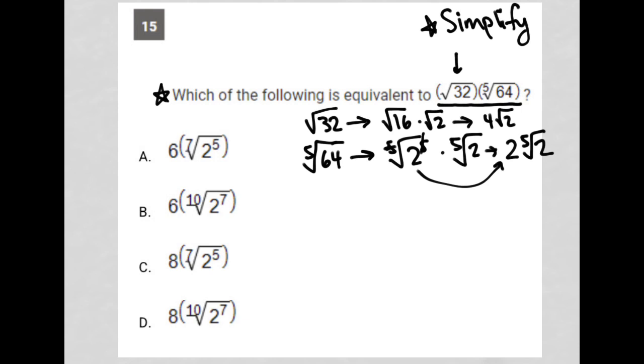So what am I left with? I have all together 4 square root 2 times 2 fifth root 2. Can I simplify this further? I definitely can. I can multiply that 4 by the 2. So I have 8 square root 2 fifth root 2. And then I need to figure out how do I simplify these guys?